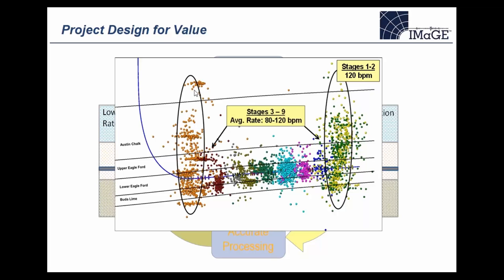At those more moderate injection rates, the microseismic shows the fractures contained to the reservoir. In the final stage, the rate was returned to 120 barrels per minute as a test and again broke out of zone. So in this particular case it looks like there's a threshold around 110 barrels per minute: below that, fracture containment; above it, break-out of zone.